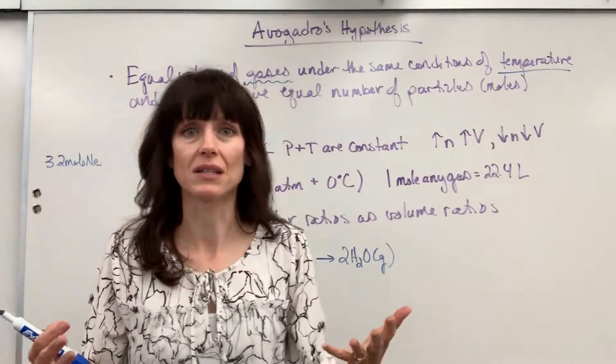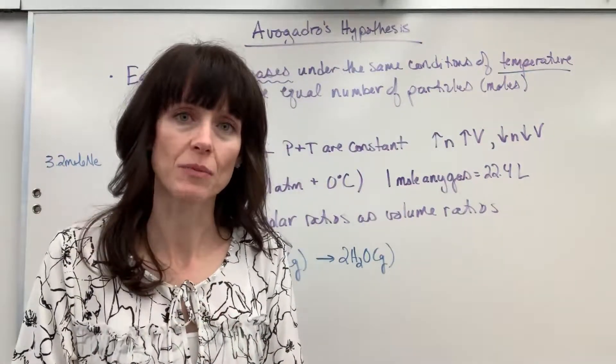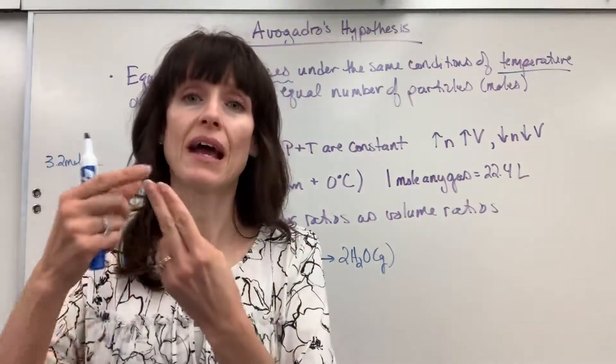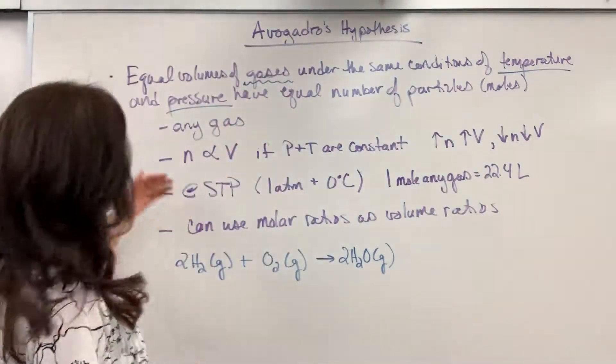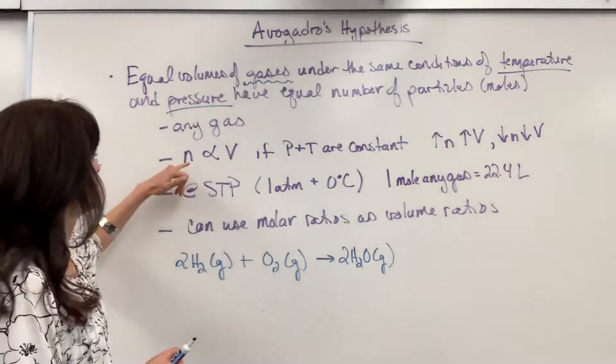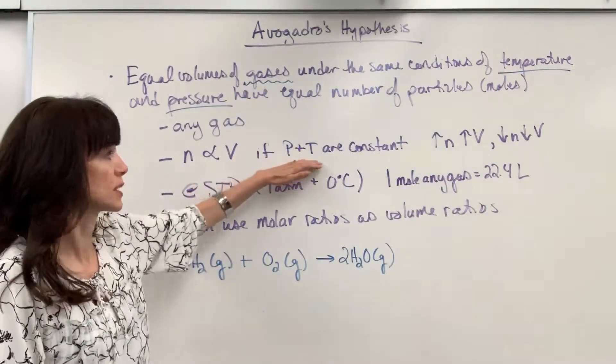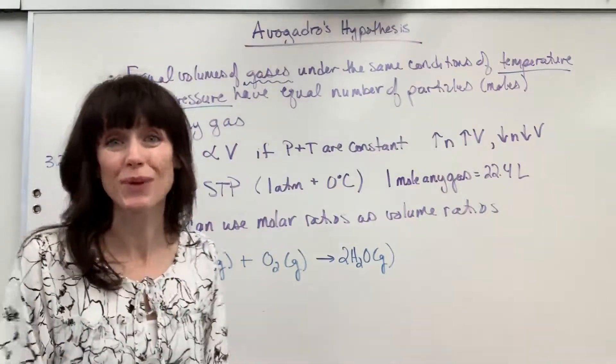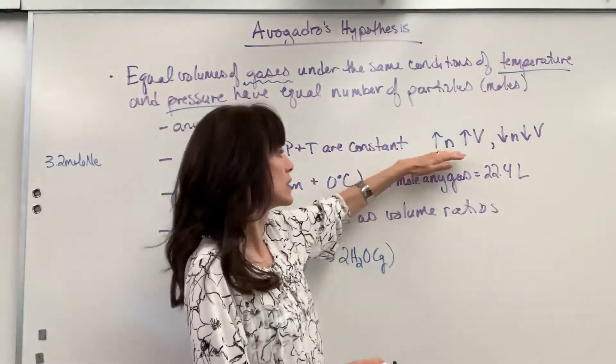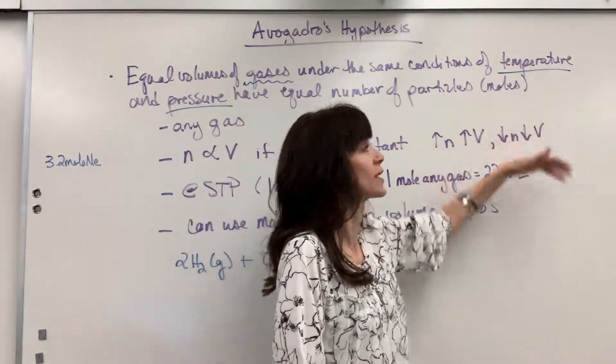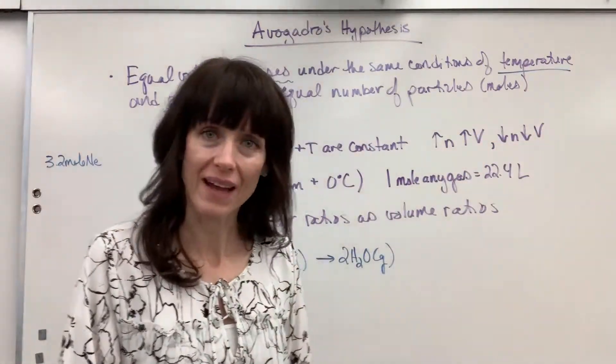So, here it is. If we have a constant pressure and temperature, there's a direct relationship between the volume of the gases and the moles of the gas. And I wrote that right here. The moles are proportional to volume if pressure and temperature are constant. So you get this direct relationship. If you increase the number of moles, you have to increase the volume. If you decrease the number of moles, you're going to decrease the volume of that gas.